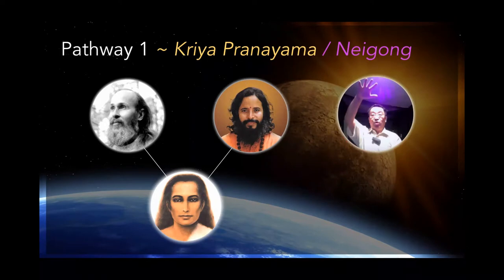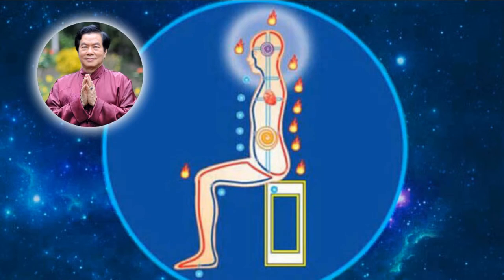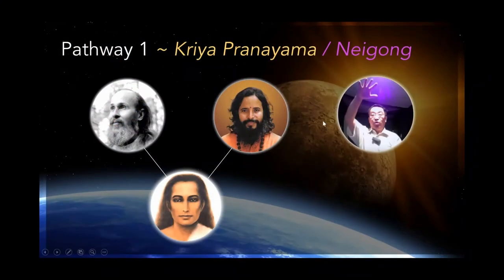Another person I've learned from is Qi Master Yang. I learned what is referred to as Neigong — which translates as 'inner work.' Kriya, in Sanskrit, means 'action,' and Pranayama refers to the life force energy moving inside you. It's a particular way to move that energy through your chakra system and magnetize your chakras. Master Mantak Chia, a very well-known Neigong master, refers to this as the microcosmic orbit — which is actually synonymous with Kriya Yoga.